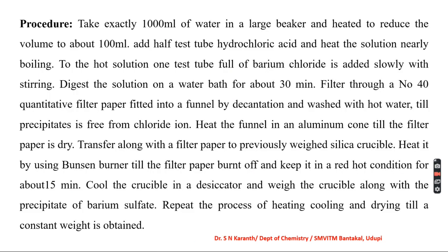To summarize the procedure: take exactly 1000 ml of water in a large beaker and heat it to reduce the volume to about 100 ml. Add half a test tube of hydrochloric acid and heat the solution to nearly boiling. To the hot solution, one test tube full of barium chloride is added slowly with stirring. Digest the solution on a water bath for about 30 minutes.